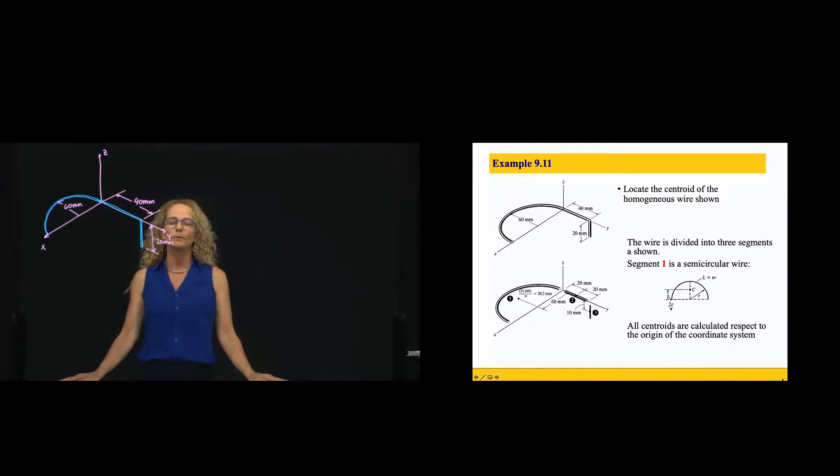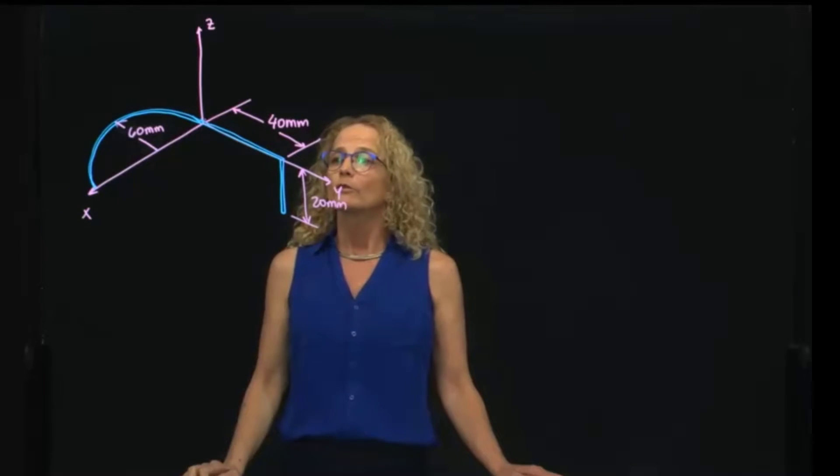Hi, this is problem 9.11. We want to find the centroid of this wire that is bent so that we have a linear part of 20 millimeters, 40 millimeters, and then we have a circular shape with a radius of 60 millimeters.